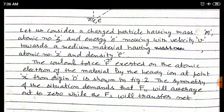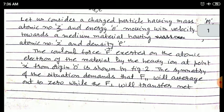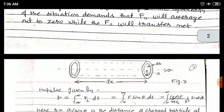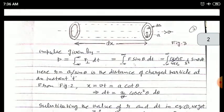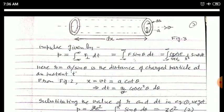The symmetry of the situation demands that F_parallel will average out to zero, while F_perpendicular will transfer a net impulse, given by the equation: p equals the integral from minus infinity to infinity of F_perpendicular multiplied by dt.